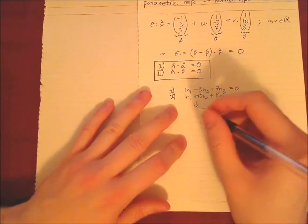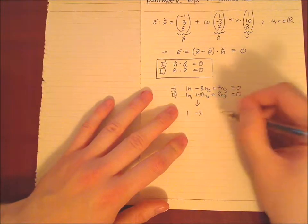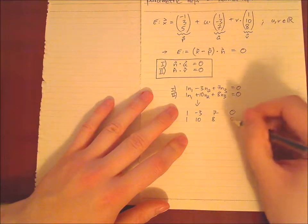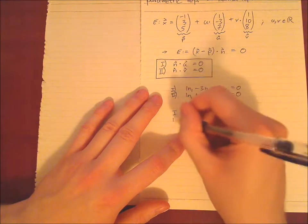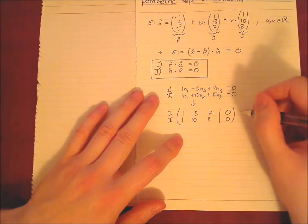Then go over to the matrix. (1, -3, 7, 0) and (1, 10, 8, 0). If you have a calculator which can do that, then use the calculator. If you don't have a calculator, use your head. It's also one way to do this.